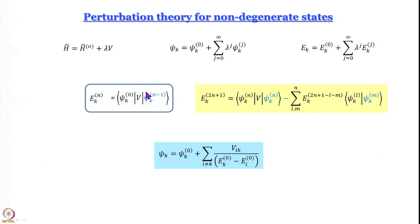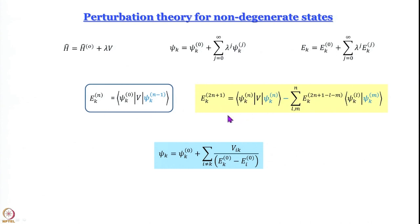We obtained this very important expression for the nth order correction to the energy, E_k^(n), which equals the integral of psi_k^(0)* times V times psi_k^(n-1) integrated over all space. If you put n equal to 1, the second wavefunction also becomes psi_k^(0). We showed this expression and noted that it is possible to come up with this (2n+1)th correction term for energy in this manner.